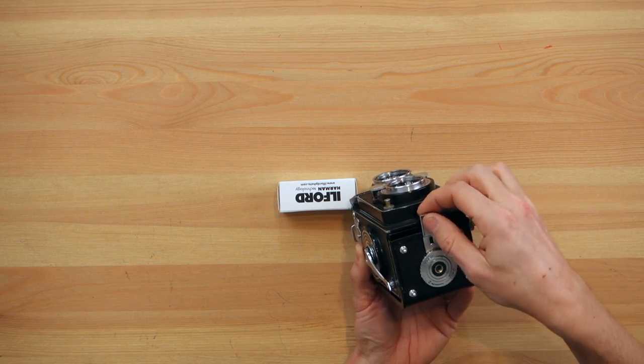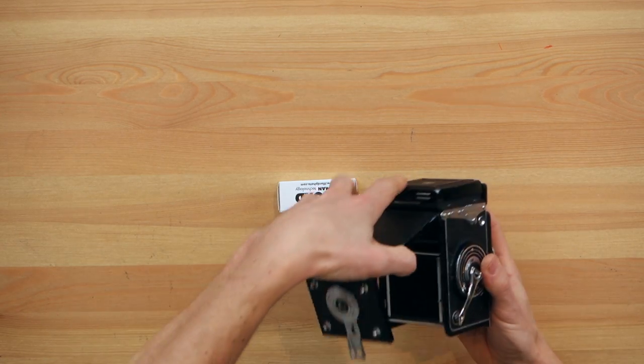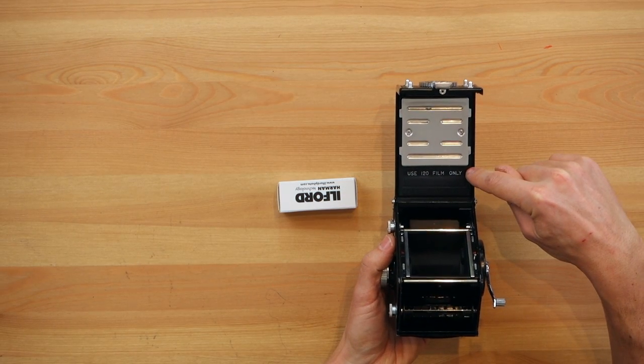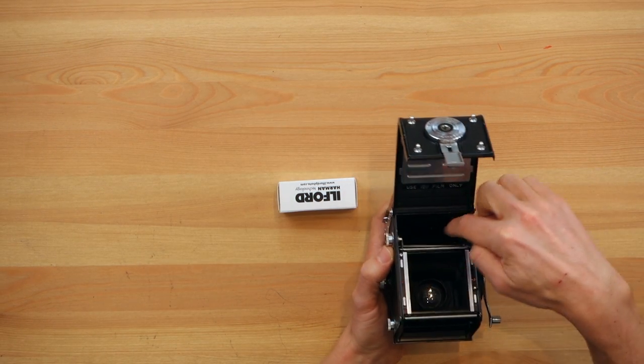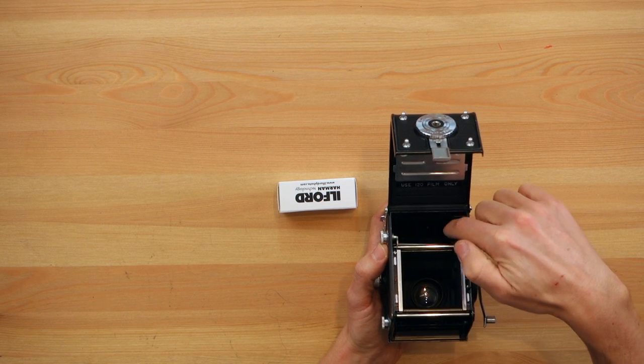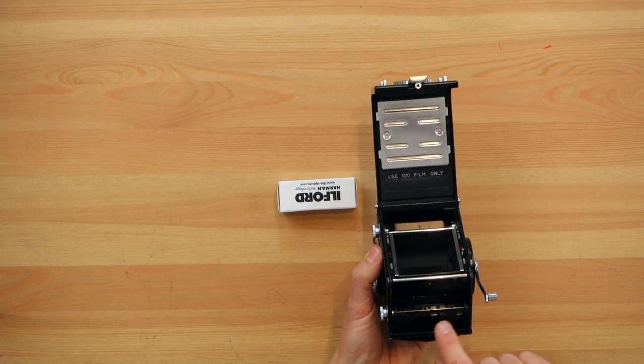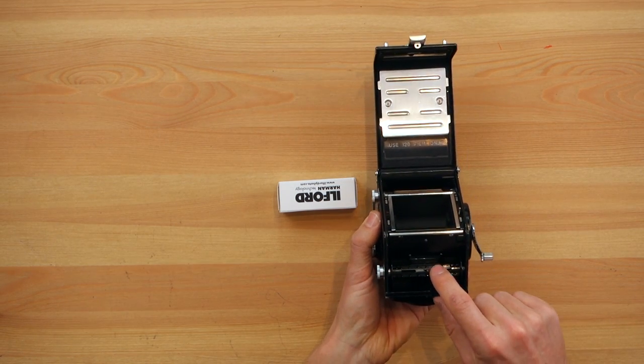Now the camera is open, you can place it on a table or on your lap. As you can see, this camera will only take 120 film. So you have your empty space here, this is where your old spool will go, your empty one, and then you have the empty spool that's here from last time.